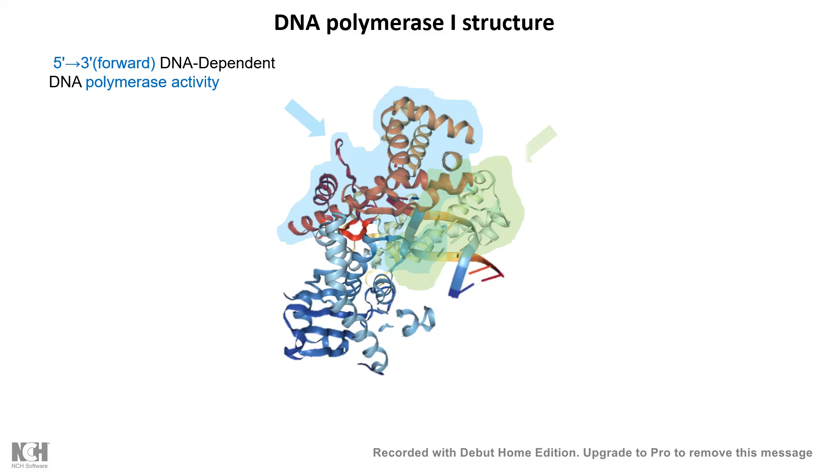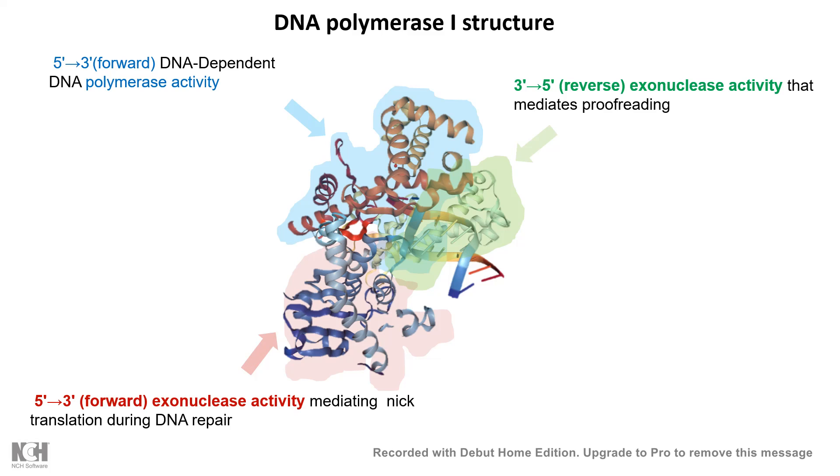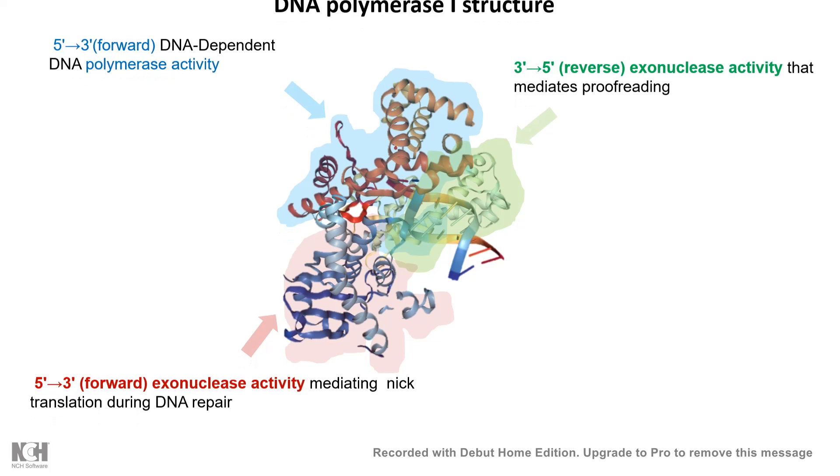The second domain is the exonuclease domain, which has exonuclease activity in 3' to 5' that helps in proofreading. And the last domain is the forward exonuclease domain, which has 5' to 3' exonuclease activity, and this is helpful for primer removal.